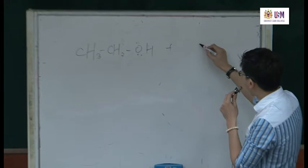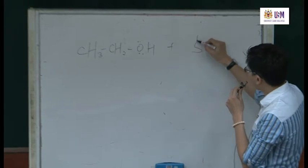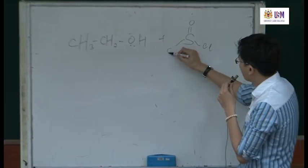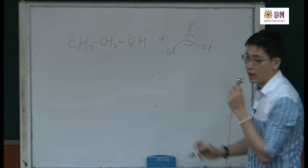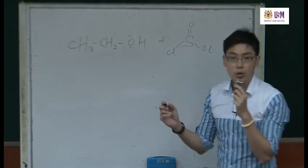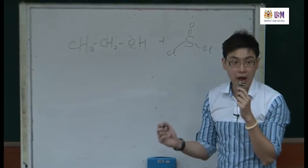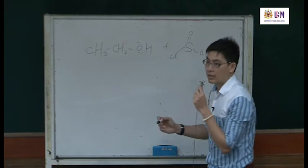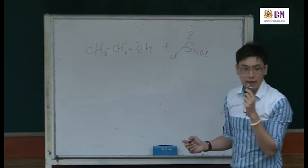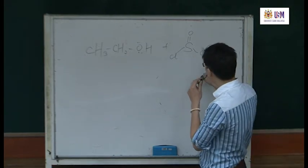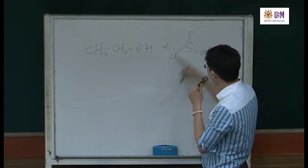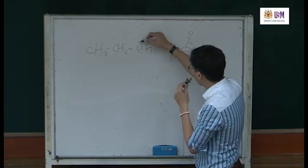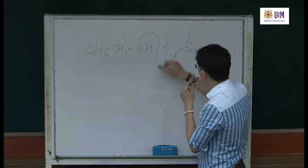And we have thionyl chloride, which is S(=O)Cl₂. The first step: always draw the curly arrow from a lone pair to attack the slightly positive atom. In this case it is S, which is electronegative. These are all electronegative atoms.